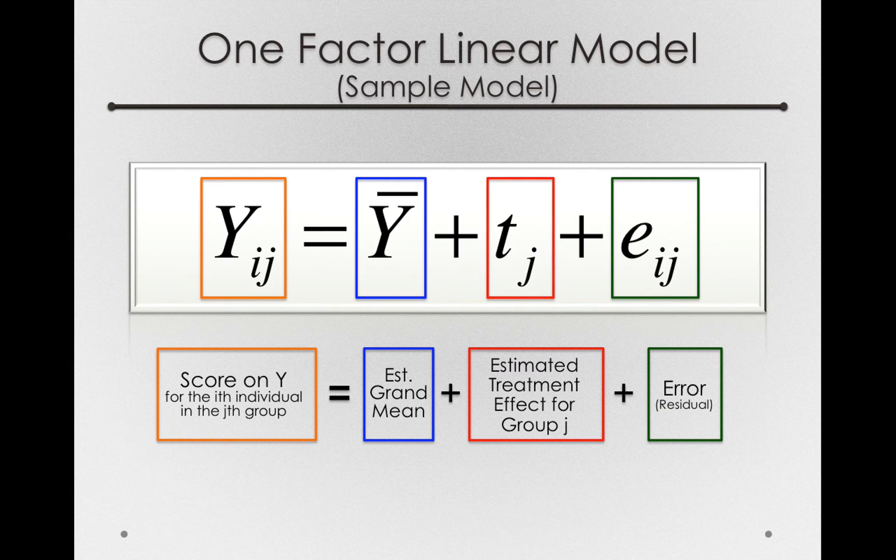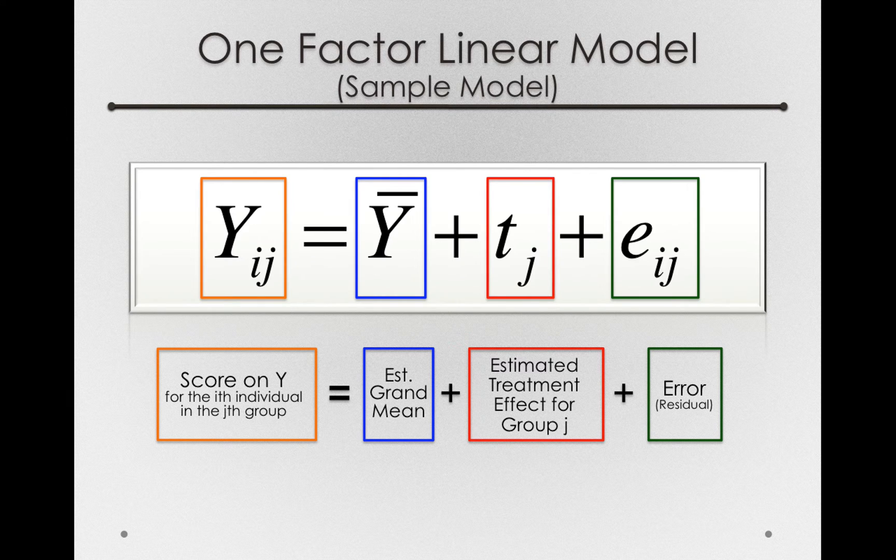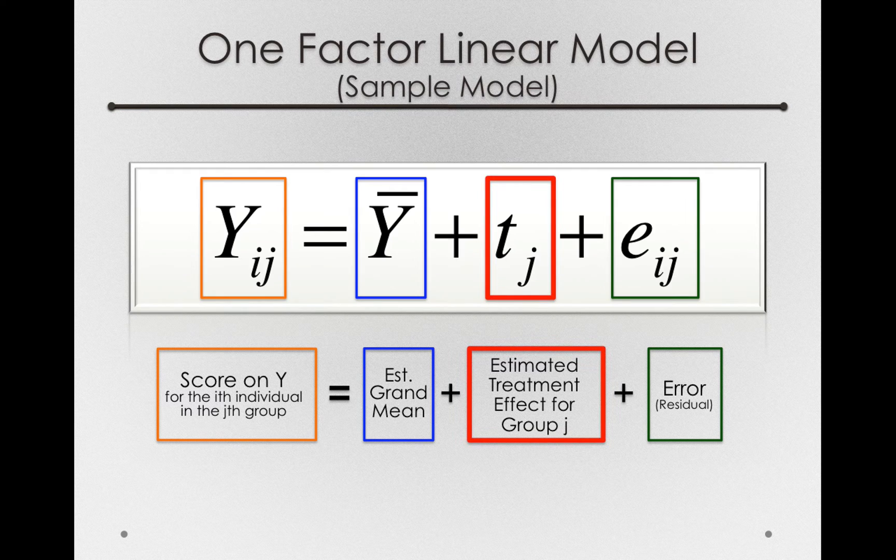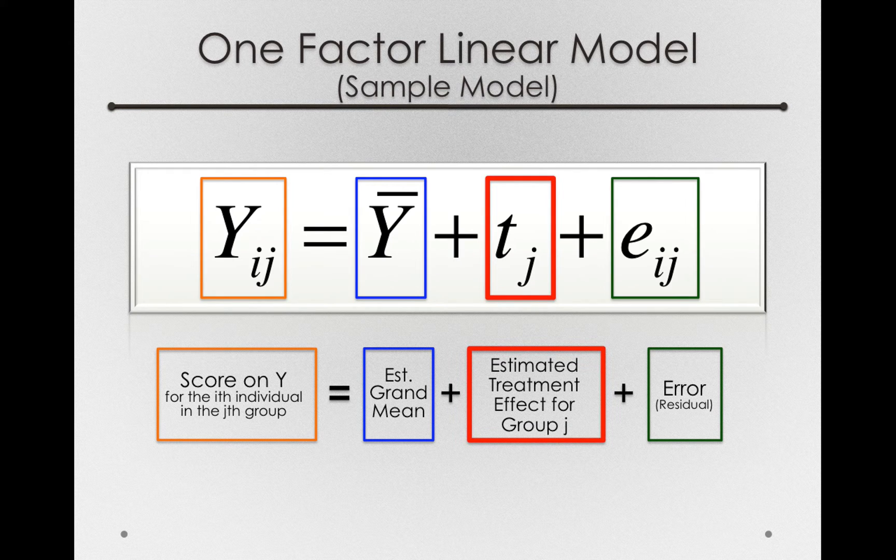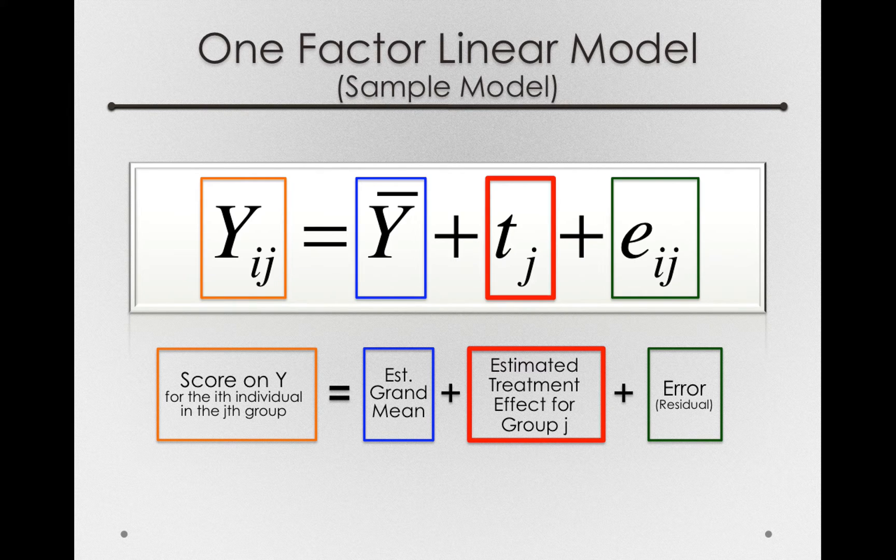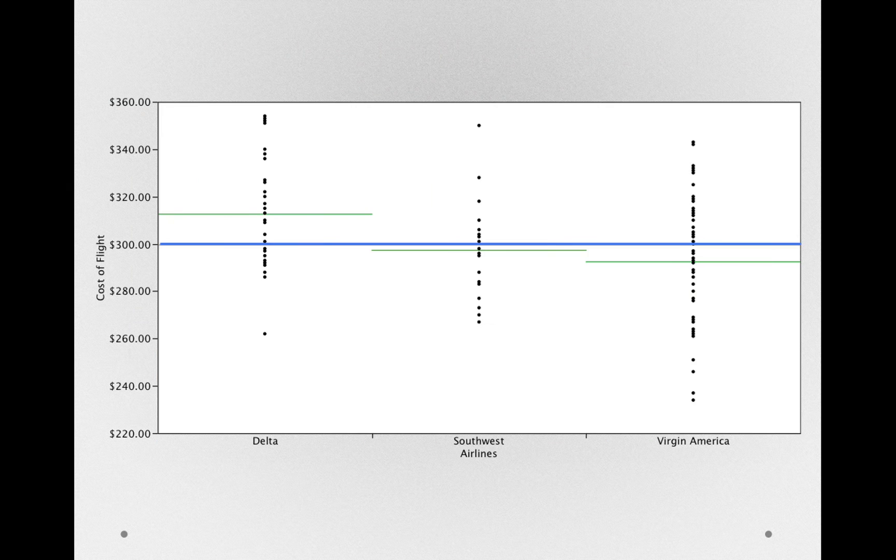Now that we have our sample model, let's look at how we might estimate these different components and what meaning they will actually give us. Let's start with the t sub j's, which are, again, the principal reason for doing any of these studies. We're interested in what these offsets are because we hope they'll reflect the true offsets in the population.